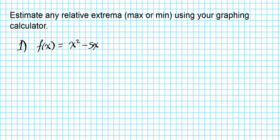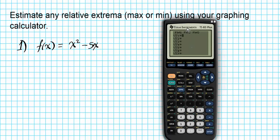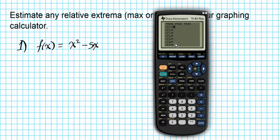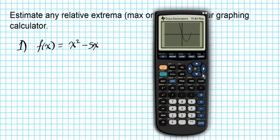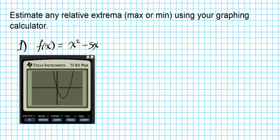We'll be using the TI-83 for this presentation. Starting from the home screen, press the Y button to access the graphing entry window. For Y1, enter the function x² - 5x. Then hit the Graph button and there's the graph.